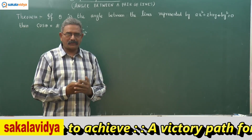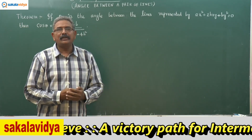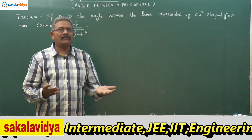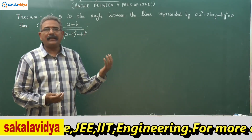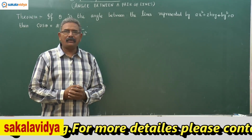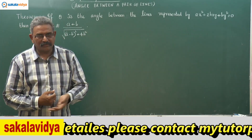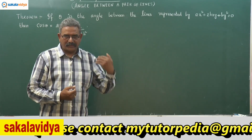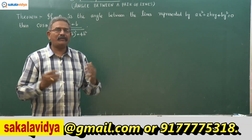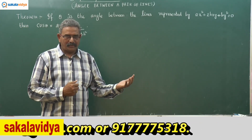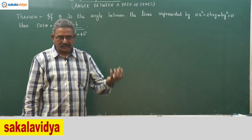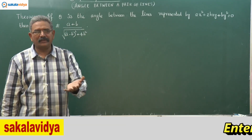Not only cos theta — sometimes you may be asked to find out tan theta also. That will be 2√(h² - ab) divided by |a + b|. You can find sin theta as well, since we know both tan theta and cos theta. Sin theta can be written as tan theta divided by sec theta. In general, most cases you will be asked to derive the formula for cos theta only.